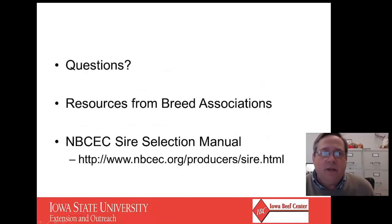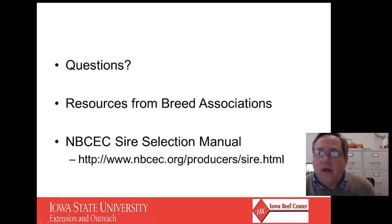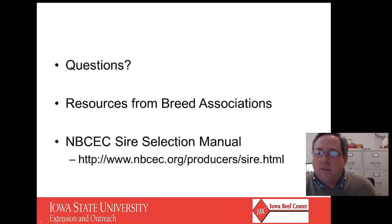If you have more questions and want more depth on this, one of the great resources out there are your breed associations, because they do generate sire evaluations. A lot of them have searchable sire engines that let you look at different traits and select bulls, especially in the AI breed, and also predict what numbers you need to look at on young bulls. Another great resource is the National Beef Cattle Evaluation Consortium's sire selection manual, which has a lot of tools you could use with all these different issues. Feel free also to talk to your local livestock specialists if you have questions.